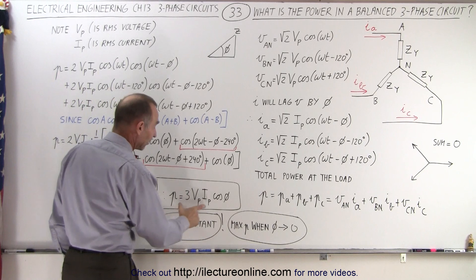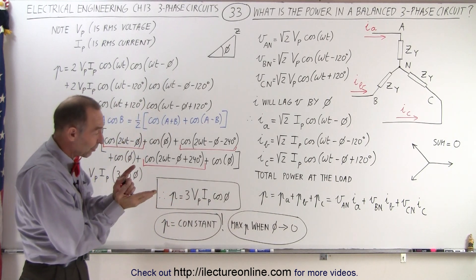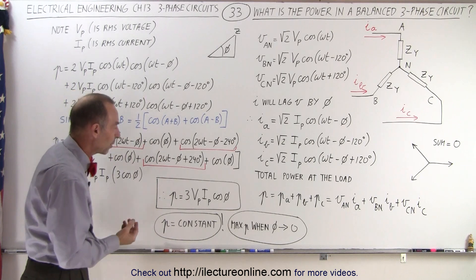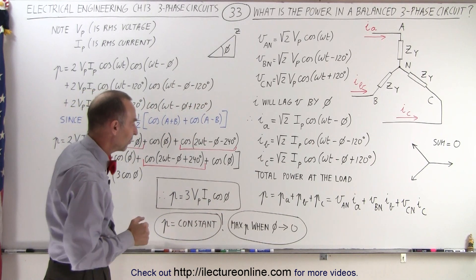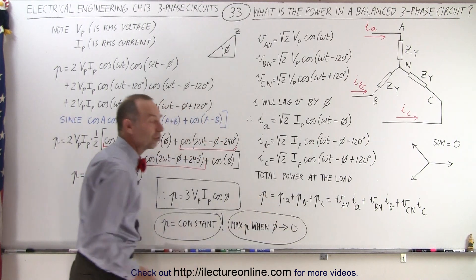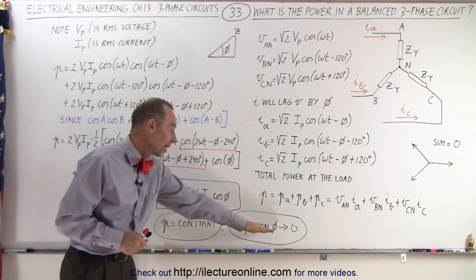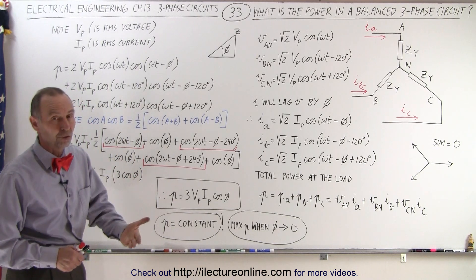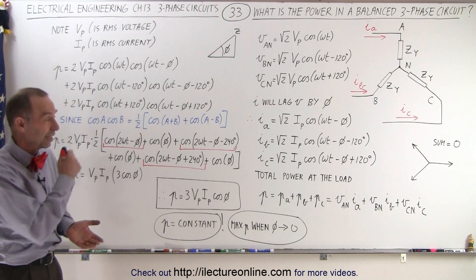This is the maximum power available, and cosine of phi reduces it. The larger the phase angle phi, the greater the power loss to the load. To maximize power to the load, you want to minimize the phase difference — sometimes by adding capacitors to reduce the phase angle. The maximum power occurs when the phase angle approaches zero. So the two main advantages are: you can control the phase angle to maximize power to the load, and the power to the load is a constant quantity, ensuring very good power distribution.